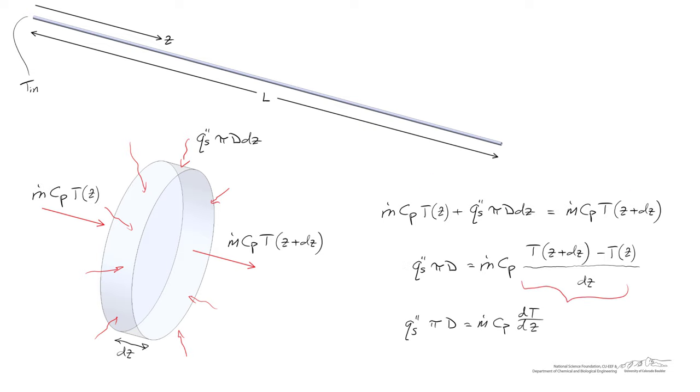If we rearrange our equation and take the limit as DZ approaches zero, we're left with this differential equation. Note that we're using a circular geometry, so the outer perimeter is pi times the diameter, but sometimes you'll see this defined as PER, a more generalized perimeter like a square tube.